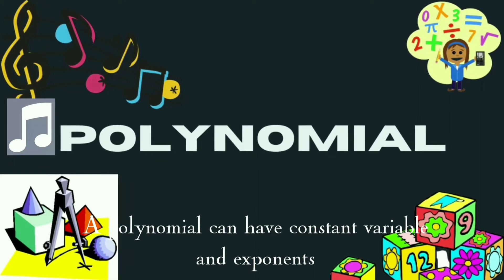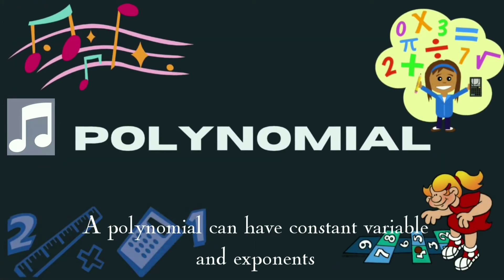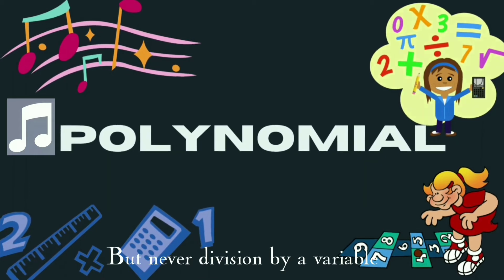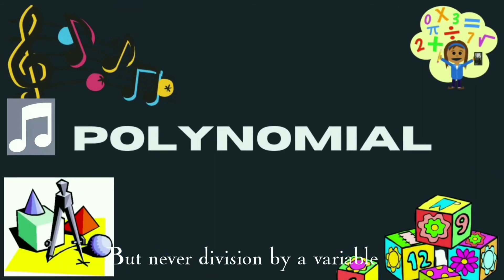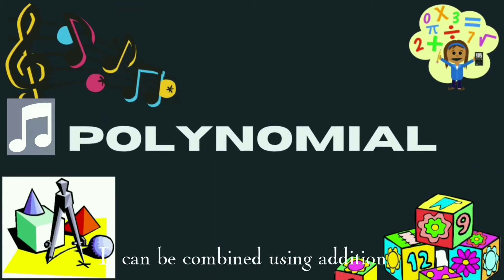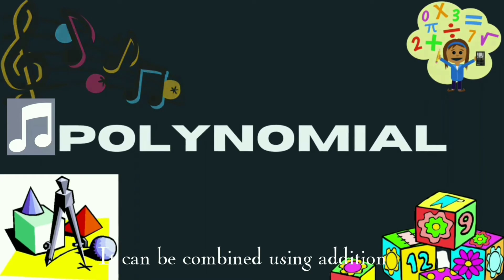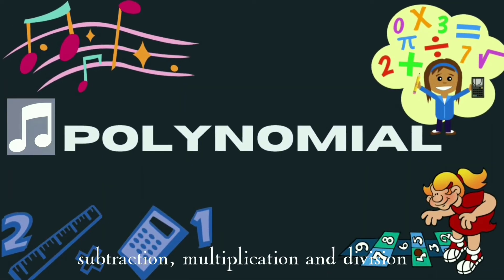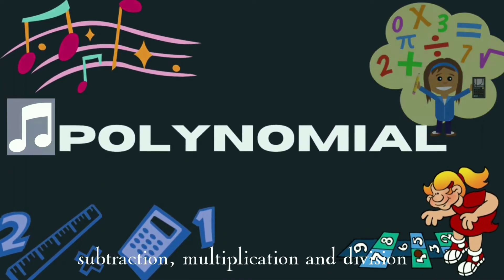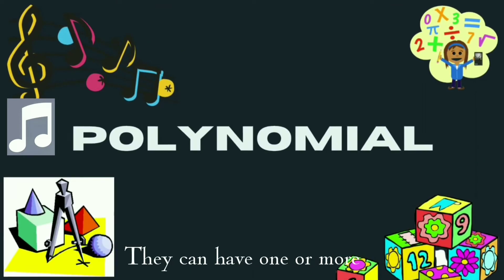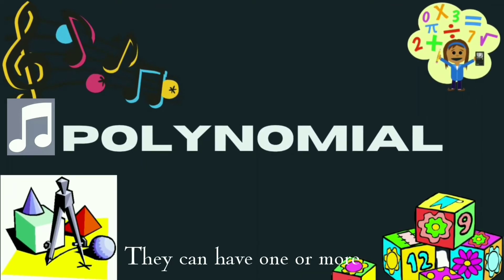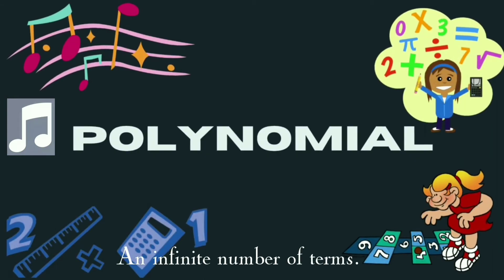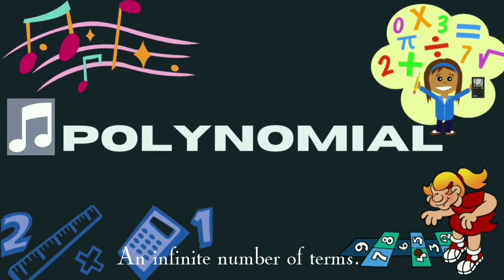Polynomials can have constants, variables, and exponents, but never division by a variable. They can be combined using addition, subtraction, multiplication, and division, but not an infinite number of terms.